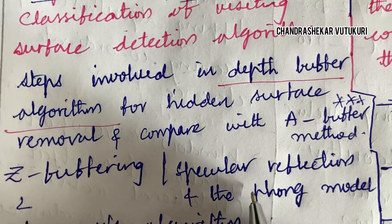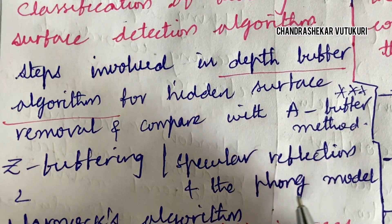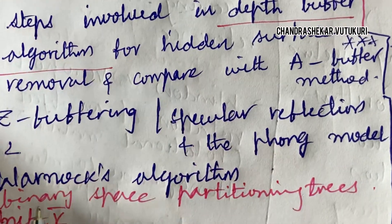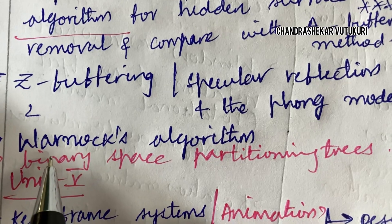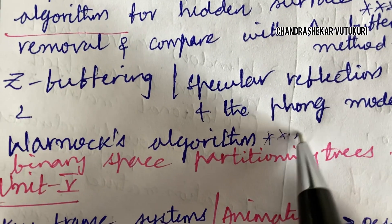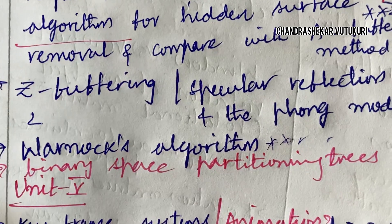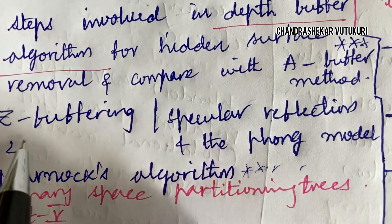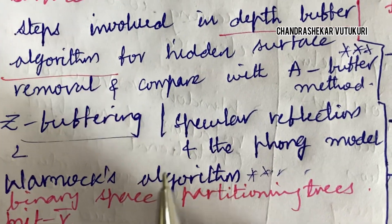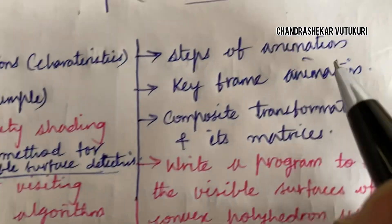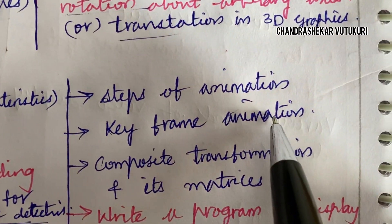Z-buffering, specular reflection, and the Phong model. Warnock's algorithm is also said to be one of the topmost questions. Binary space partitioning related to Z-buffer — you are going to get a short question this time. Steps of animation is also included.